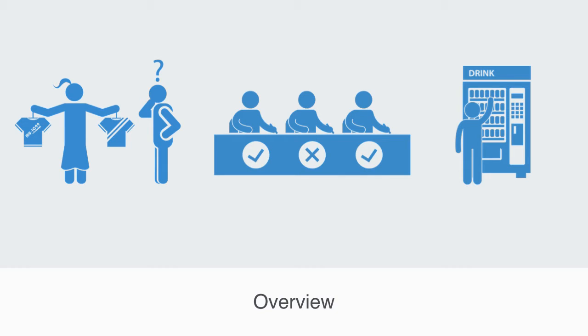We'll be discussing the standard model of rational choice theory. We'll look at its basic assumptions, grounded in the idea of perfect information. We'll then go on to talk about what happens when these assumptions break down, and look at the alternative models that are coming out of behavioral economics, as it is presenting us with a new set of context-dependent models for how agents make decisions within complex and uncertain environments.